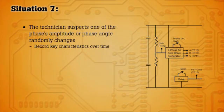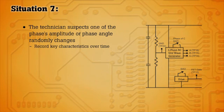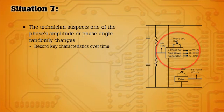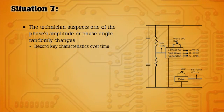In this scenario, we suspect a phase amplitude or phase angle is randomly changing, so we're going to measure the output of the three phases. The problem we'll be trying to solve happens randomly. So how do we capture that event?